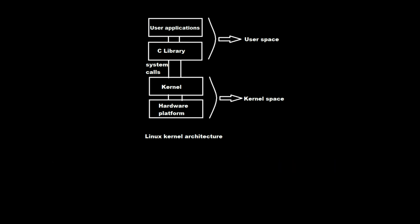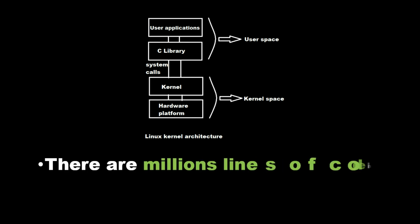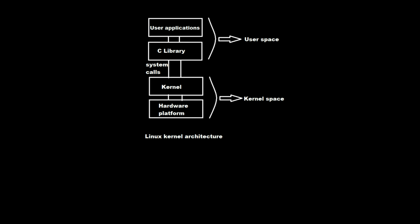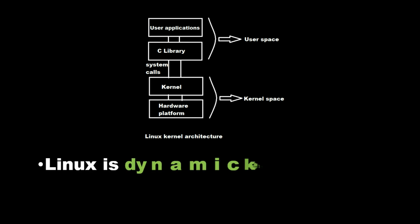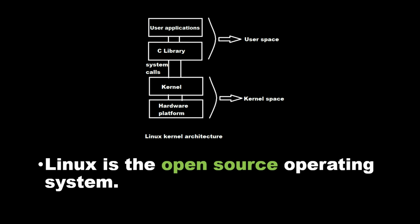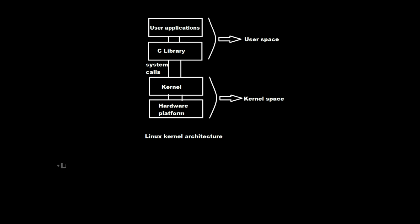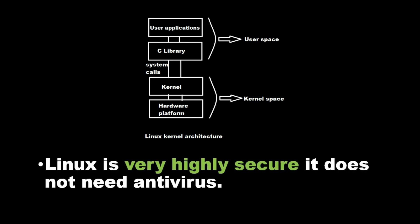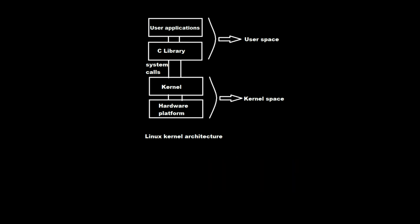There are millions of lines of code in the Linux kernel. Linux is a dynamic kernel. Linux is an open source operating system. Linux is very highly secure — it does not need antivirus.